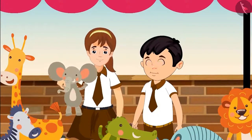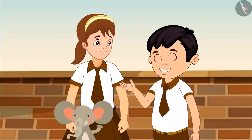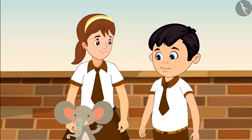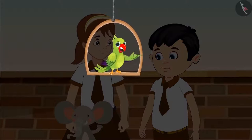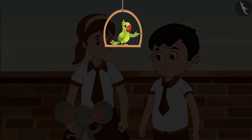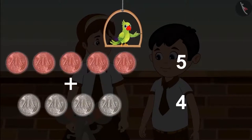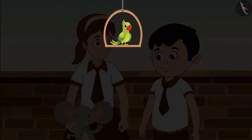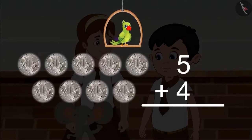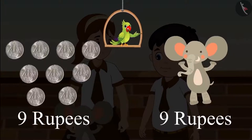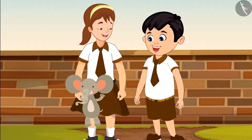Aarti, how much is this elephant for? It's for nine rupees. Aarti, I have five rupees. I have four rupees. Chotu and Aarti both really like the stuffed elephant toy, but will they be able to buy it? Chotu has five rupees and Aarti has four rupees, so together they have five, six, seven, eight, nine. We can also write it in an organized manner: when we add five rupees and four rupees, we get nine rupees. Chotu and Aarti together have nine rupees and the elephant also costs nine rupees, so they bought the stuffed toy.